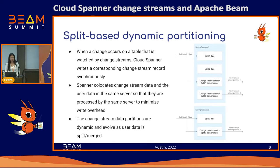Spanner scales by dynamically splitting and merging the user data based on database load and size, and distributing splits across serving resources. To enable change stream reads and writes at scale, Spanner also splits the internal change stream storage along with database data. The change stream data partitions are dynamic and they evolve as user data is split and merged. Understanding the split-based dynamic partitioning is helpful to understanding how change stream queries work, since the Spanner query API is designed for change streams to be queried concurrently from the change stream data partitions.